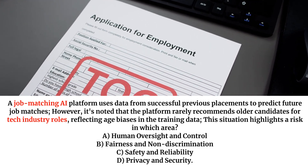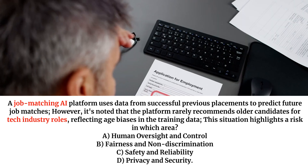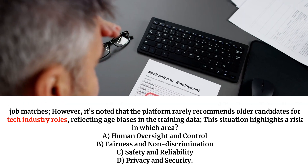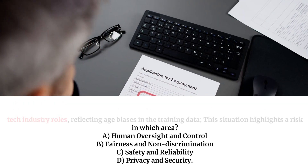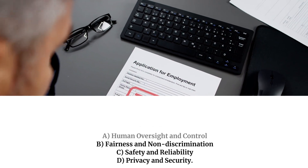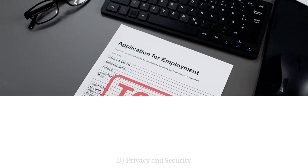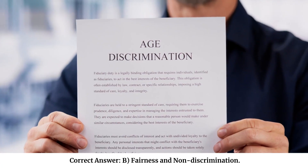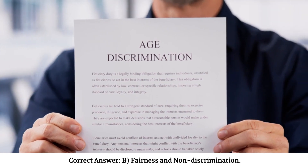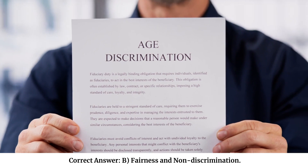A. Human oversight and control. B. Fairness and non-discrimination. C. Safety and reliability. D. Privacy and security. Correct answer: B — Fairness and non-discrimination.